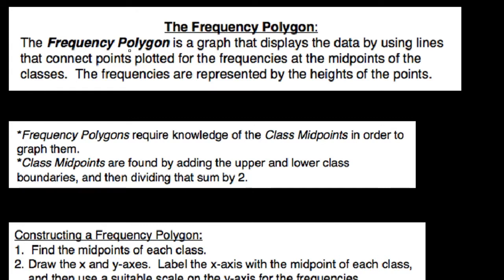A frequency polygon is a graph that displays data by using lines that connect points plotted for the frequencies in the midpoints of the classes. This is different from a bar graph in that we're going to use lines and connect points. These points are the frequencies, so we make a point for each frequency in the table. Instead of a bar that goes up that high, we just make a point and then connect the dots.